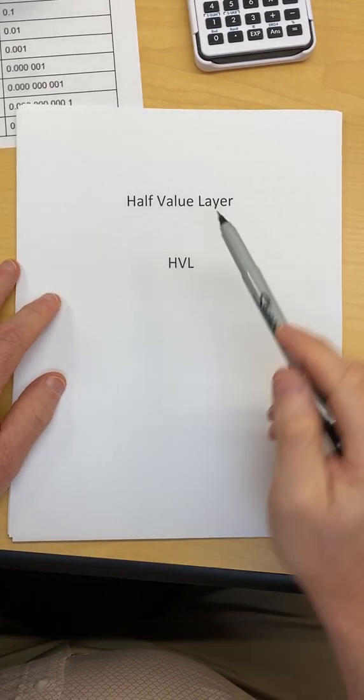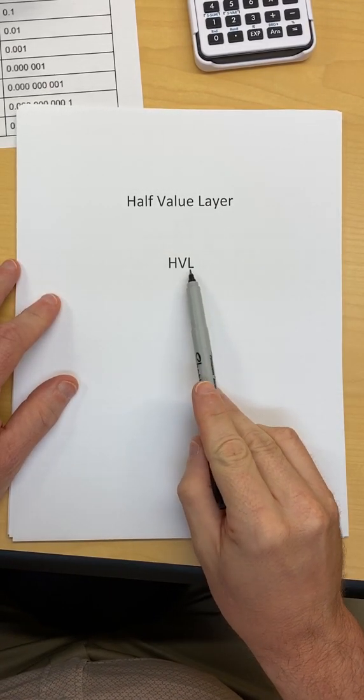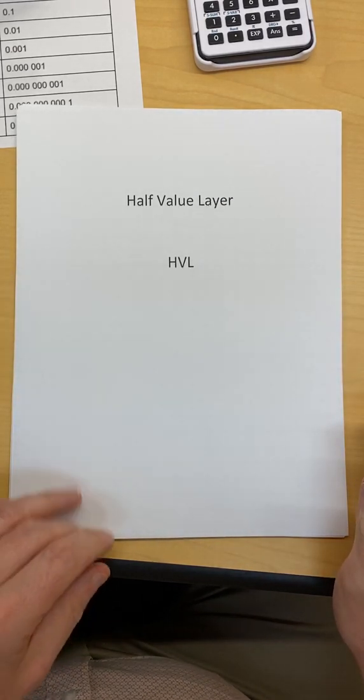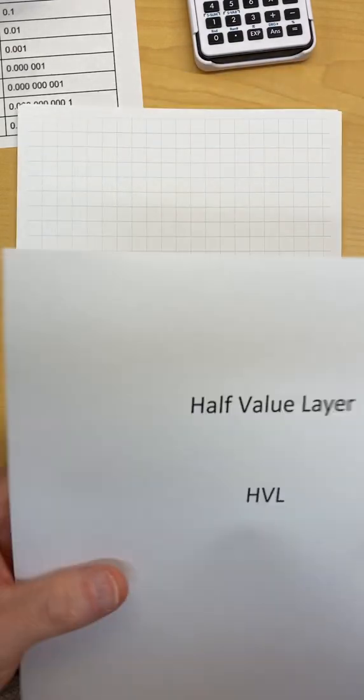Okay, half value layer, also designated HVL. You see it both ways, half value layer. It's the layer of material that's required to attenuate an x-ray beam by half of its intensity.